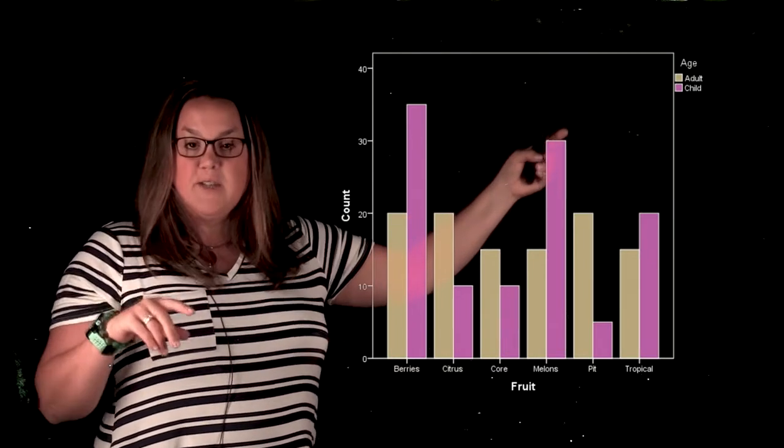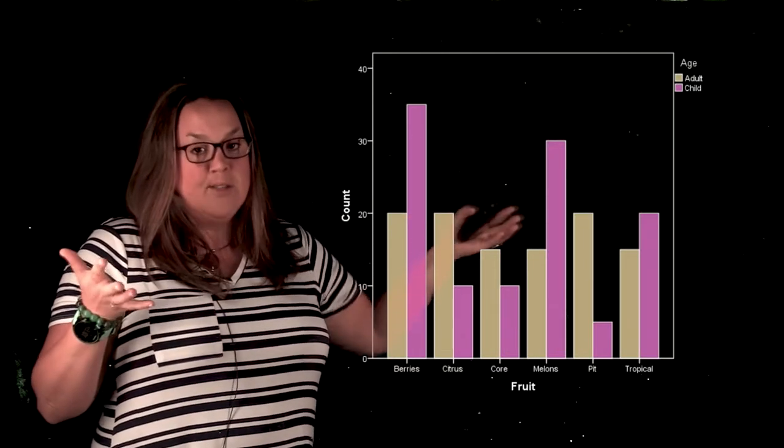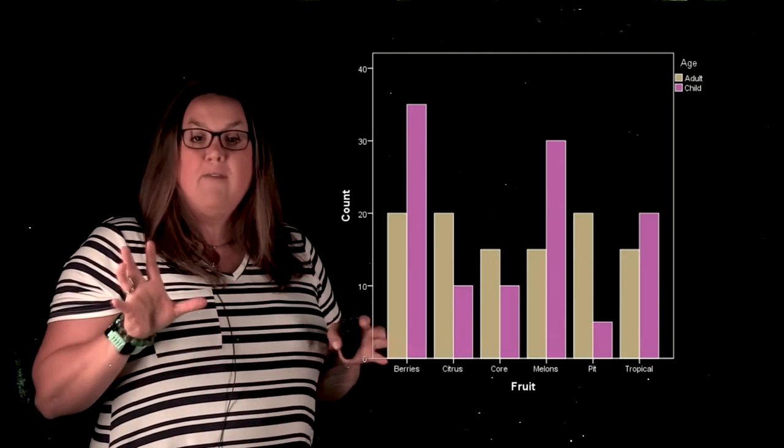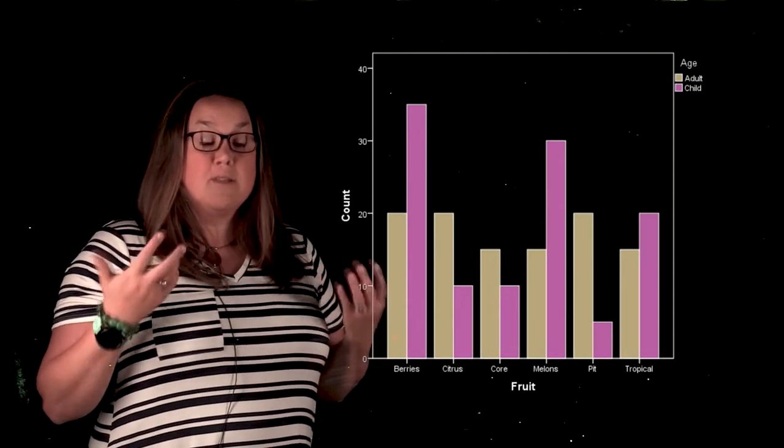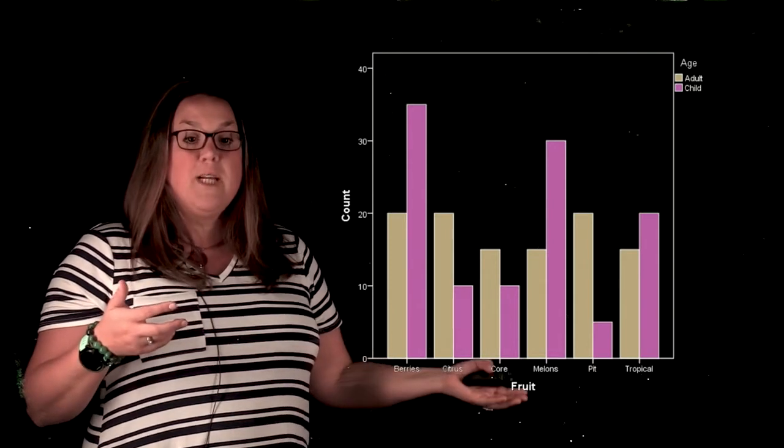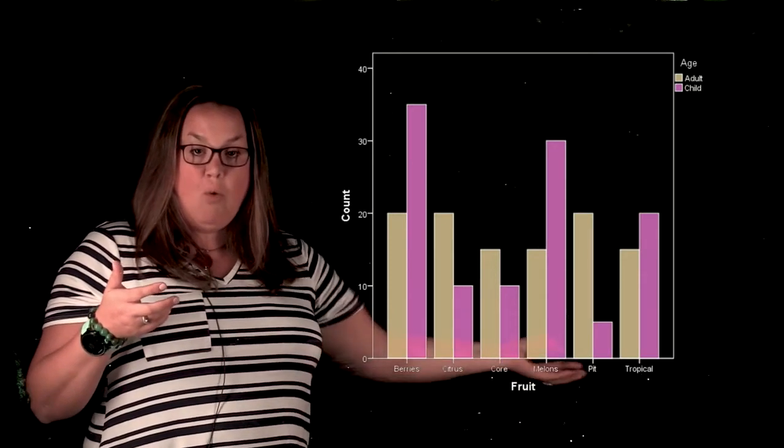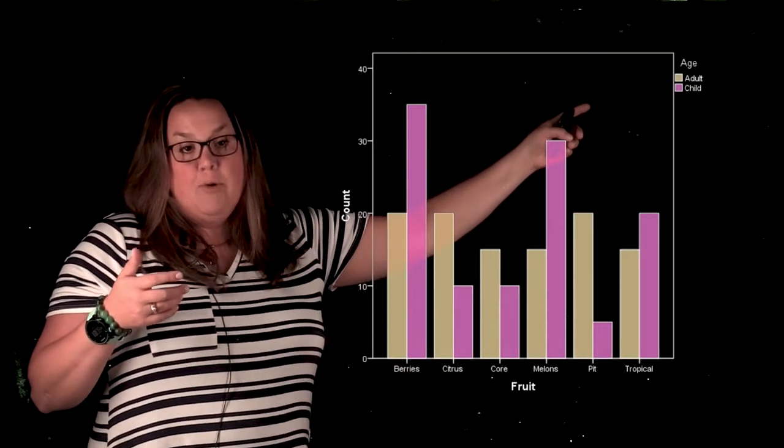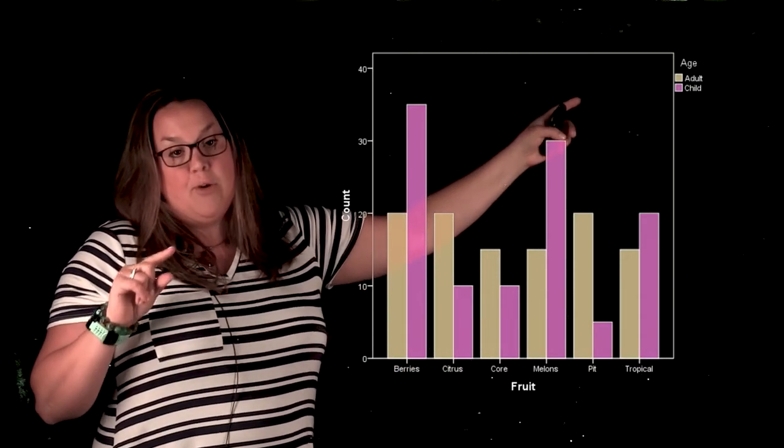The second categorical variable is represented in the legend. So here it's different colors, but it could be patterns as well. Typically the way that a clustered bar graph is set up is the response variable is going to be represented on the horizontal or x-axis, and then the explanatory variable is represented with different colors or patterns.